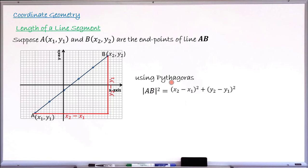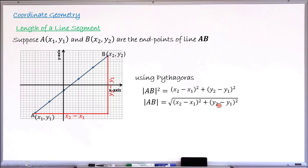To find AB — not AB squared — we take the square root of both sides. So the length AB equals the square root of (x₂ − x₁)² + (y₂ − y₁)². This is the simple formula used to find the length of any line segment when the coordinates of its endpoints are given. Let's take examples to see how we can use this formula.